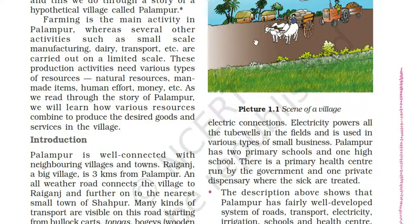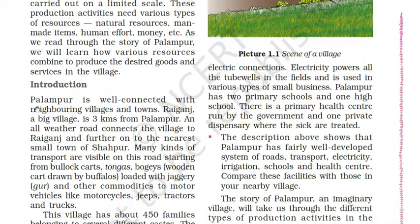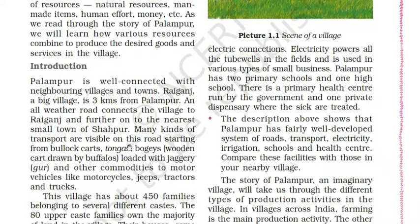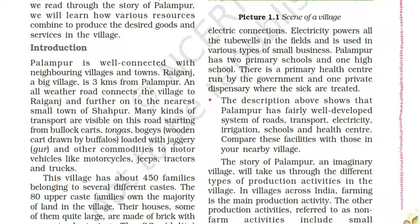Here is a picture of a scene of a village. Palampur is well connected with neighboring villages and towns. Raigunj, a big village, is 3 kilometers from Palampur. An all-weather road connects the village to Raigunj and further on to the nearest small town of Shampur. Many kinds of transport are visible on this road, starting from bullock carts, tongas, wooden carts drawn by buffaloes loaded with jaggery, to motor vehicles like motorcycles, jeeps, tractors and trucks.